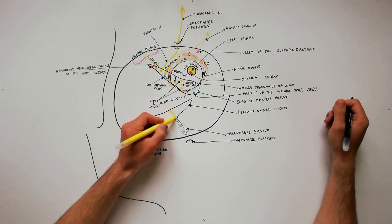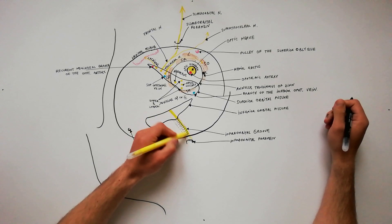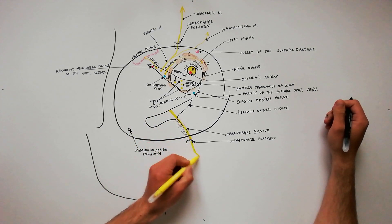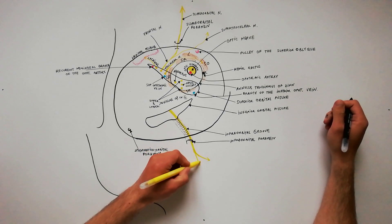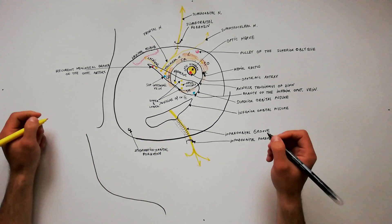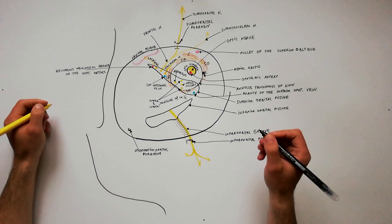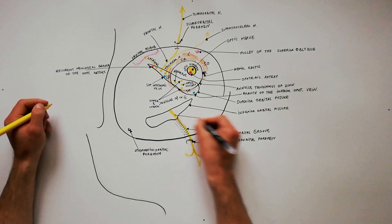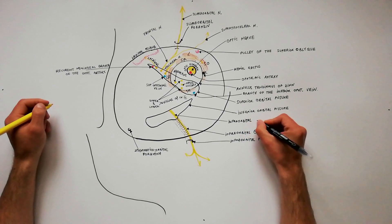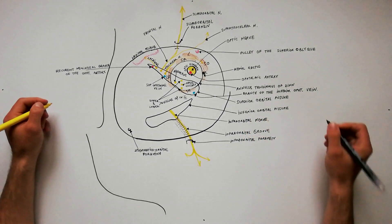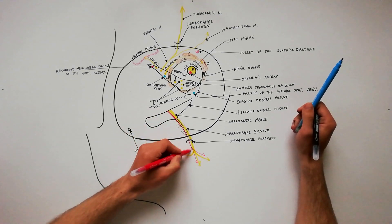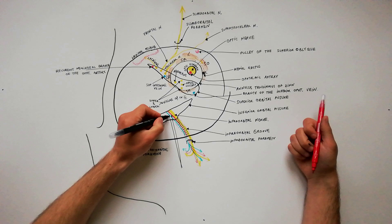Now let's indicate the structures passing through the inferior orbital fissure. The infraorbital nerve arises as a continuation of the maxillary nerve; it is first located in the infraorbital groove and then leaves the orbit through the infraorbital foramen. It is a sensory nerve and ends with nasal, palpebral, and labial branches. This nerve is accompanied along its course by the infraorbital artery and the infraorbital vein.